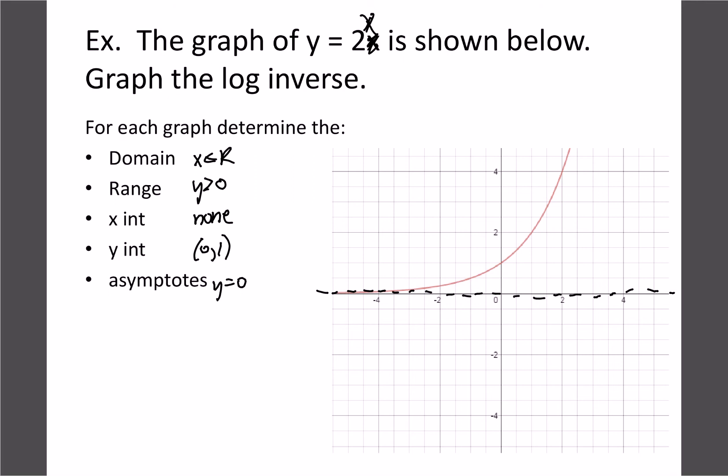If we were to draw our log graph, remember it's the inverse so that would be the diagonal reflection. All of our coordinates trade. This 0, 1 will now become 1, 0, and another one at 2, 4 will now become 4, 2, and we'd end up getting our graph looking something like that.